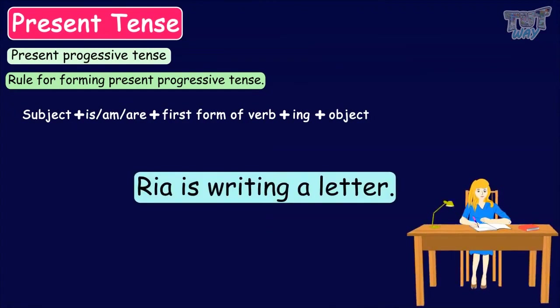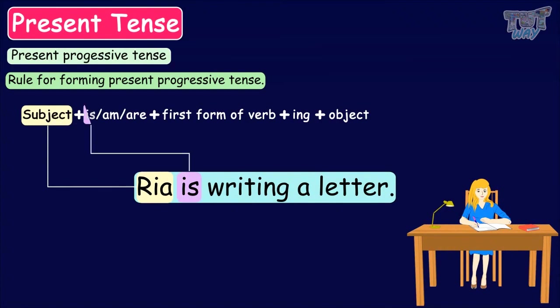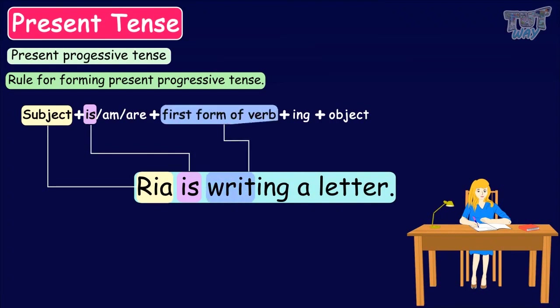'Rhea is writing a letter.' Here, Rhea is the subject. Is is the helping verb because the subject is singular. Writing is the first form of the verb write with ing, to show that the action is still in progress. And letter is the object.